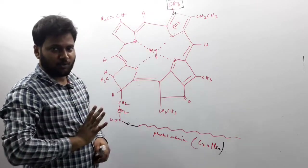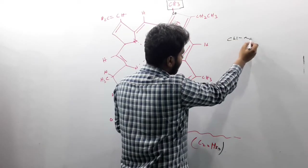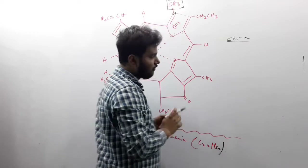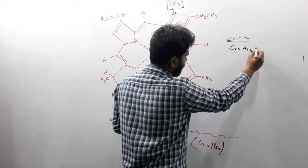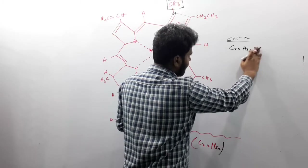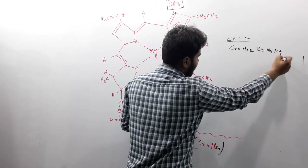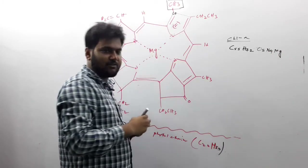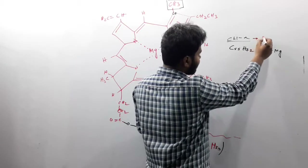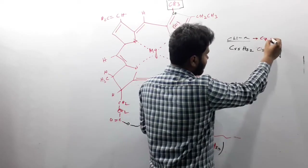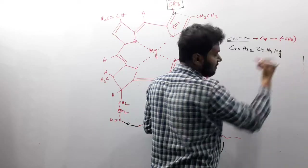At C7 position there is one methyl group. The chemical formula of chlorophyll A is C55, H72, O5, N4, Mg. In chlorophyll A, the side chain at the C7 position is one methyl group.